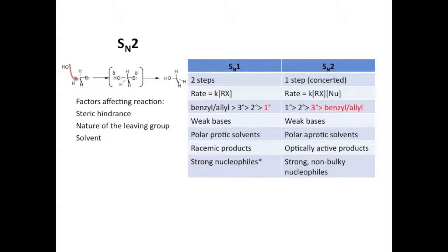And finally, SN2 favors strong, non-bulky nucleophiles. They have to be non-bulky so they can actually attack from the backside. If the nucleophile itself has too much stuff in the way, if it's too sterically hindered, it can attack effectively.